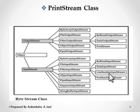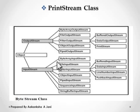First is byte stream class. Streams which handle binary data are known as byte streams, such as images and sounds, which are binary data. Byte streams read and write 8-bit data. These are the class hierarchy of byte stream class. OutputStream and InputStream are the byte streams.